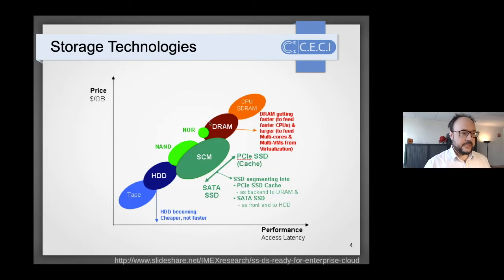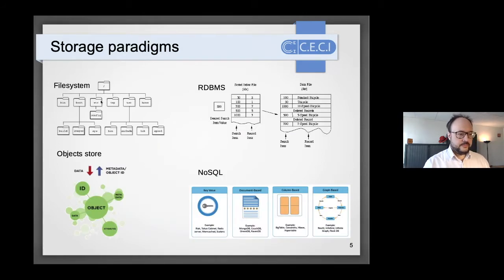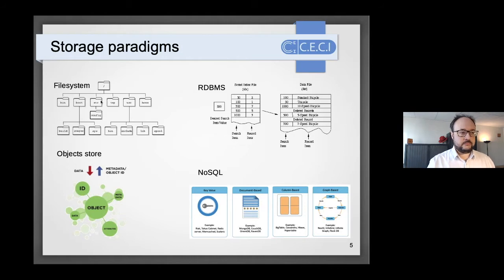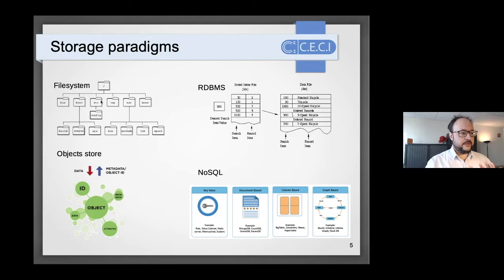There are four storage paradigms to consider. The first is file systems, which everyone is familiar with — files stored in directories or folders, each with associated metadata such as owner and permissions.